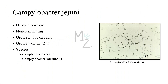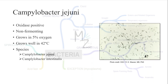Campylobacter is oxidase positive. It is non-fermenting, which means it does not ferment lactose or glucose. It grows better in 5% oxygen and grows well at 42 degrees Celsius temperature. It is sensitive to nalidixic acid. We have two species of Campylobacter: the one we are discussing today, Campylobacter jejuni, and the other one, Campylobacter intestinalis.